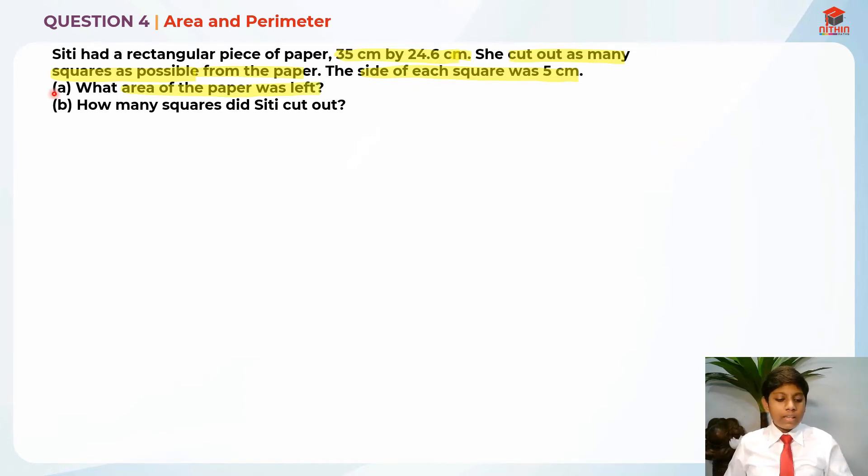They didn't give us any drawings here, so let us draw ourselves. First, I'm going to draw the square. So the square is 5 cm by 5 cm. You can keep it as a reference. After that, I'm going to draw a rectangle. So this is the rectangle, this is 35 cm over here and this is 24.6 cm.